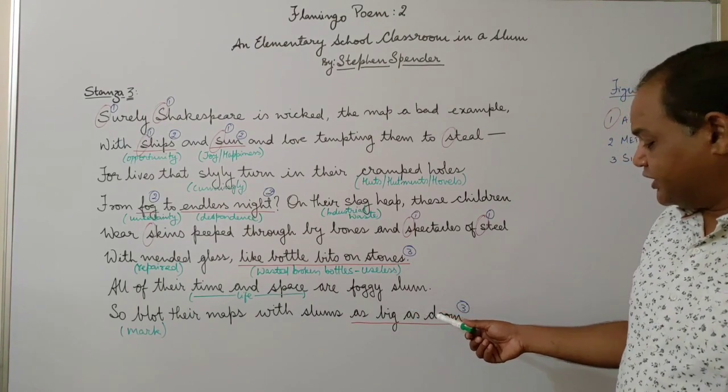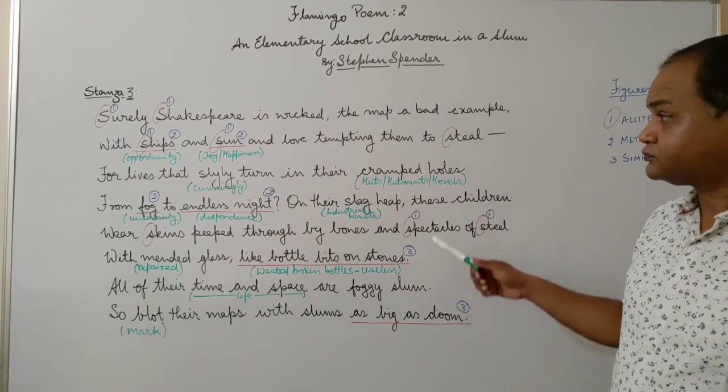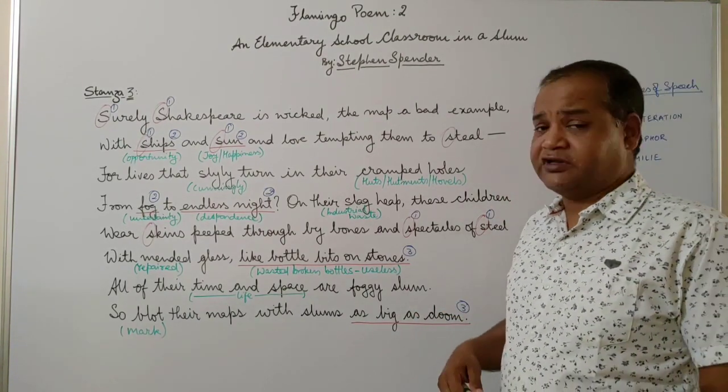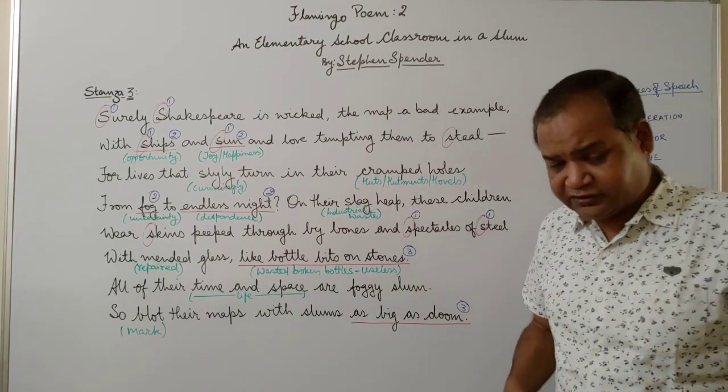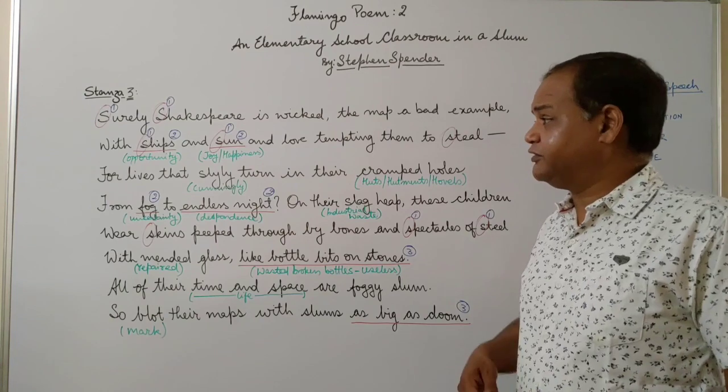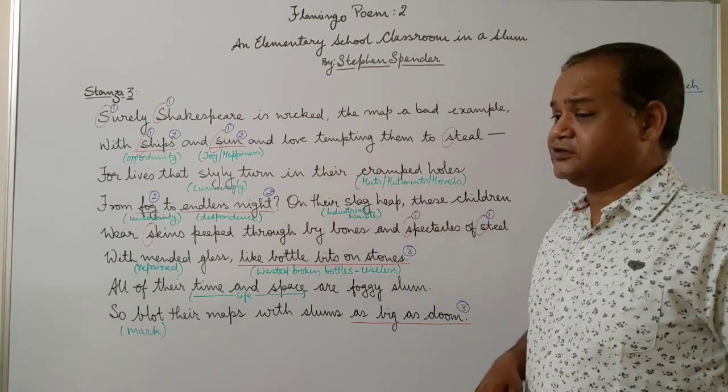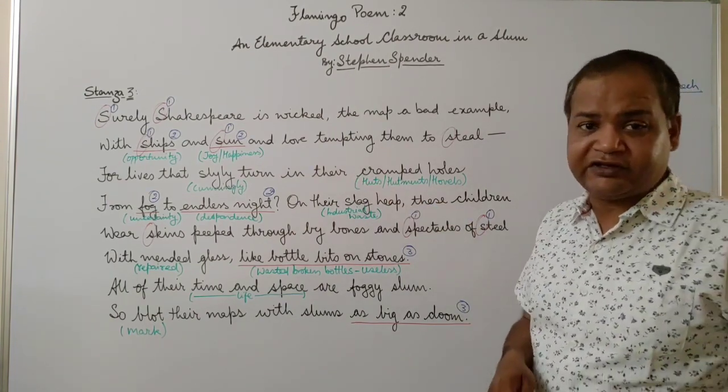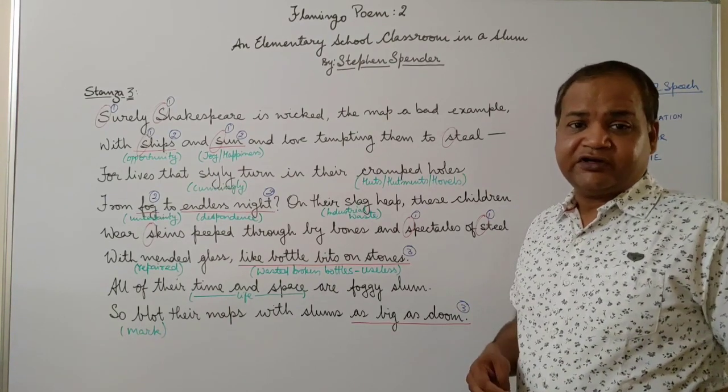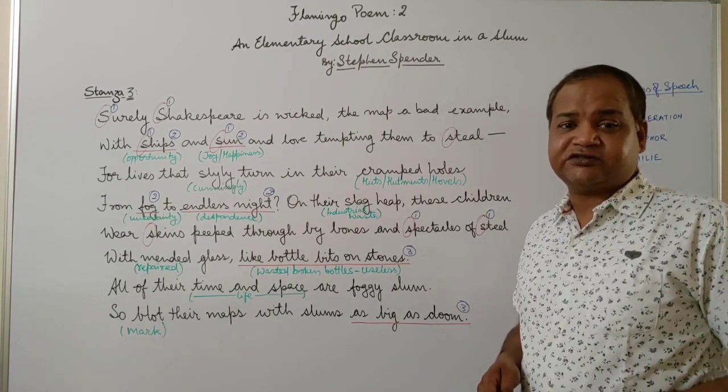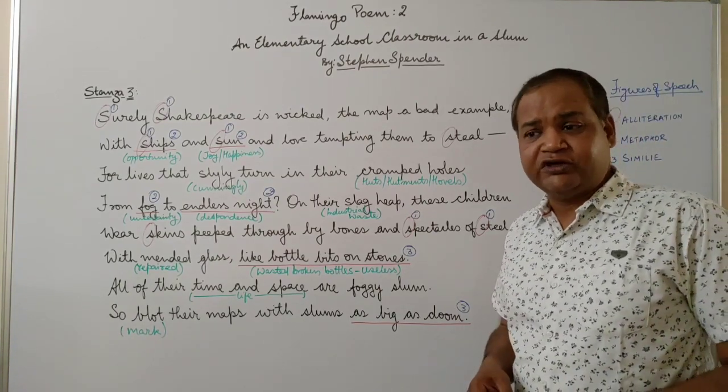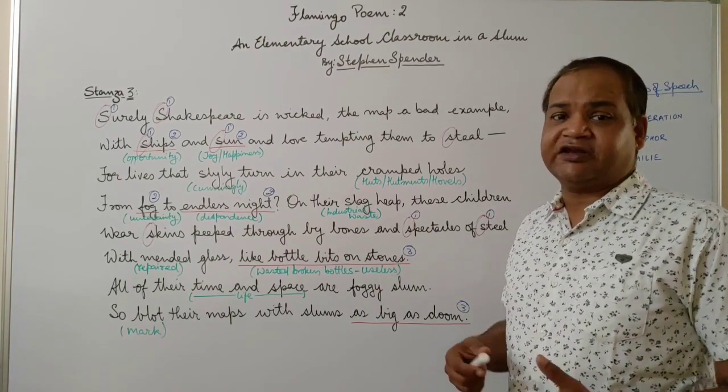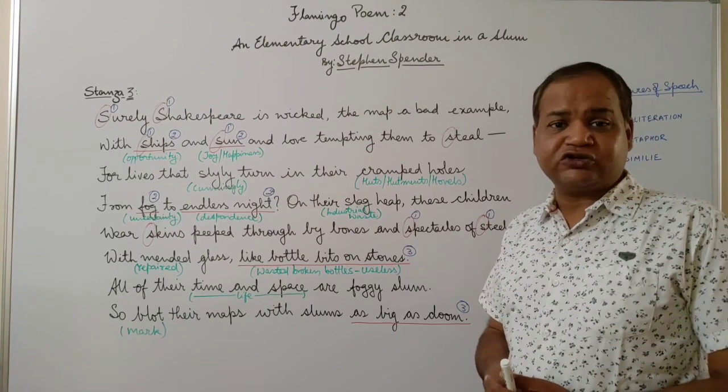The poet is now trying to describe how the donations which have been given to these children are irrelevant. He's called Shakespeare wicked. Now Shakespeare is being called wicked here because Shakespeare as a playwright and as a poet never wrote about the poverty of the poor. He never wrote about the class differences and the social gaps.